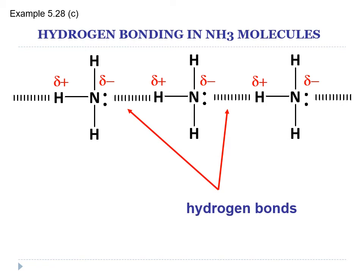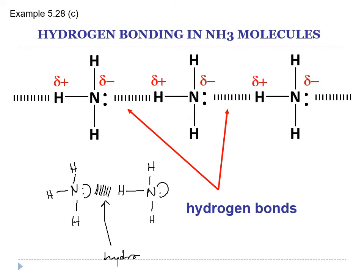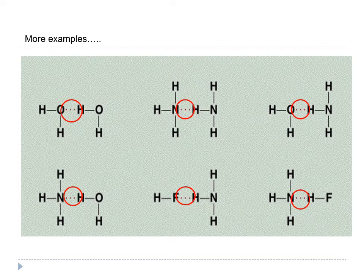For ammonia, we draw the trigonal pyramidal structure. The electronegative part of N is connected to the electropositive part of hydrogen in another molecule, forming a hydrogen bond. More examples include hydrogen bonding formed between H-N-O, H-N-N, and H-N-F.